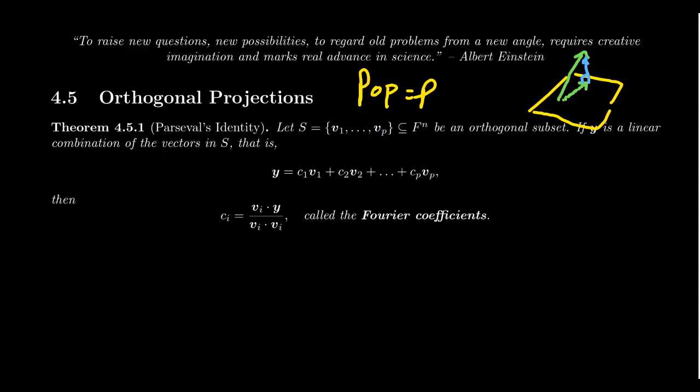And let's claim that this is an orthogonal set. So given any pair of vectors inside of S, their dot product or Hermitian product will equal zero. So we say that a vector Y, well, so we know that, let's say that Y is a linear combination of the vectors from S. So there are coefficients, C1, C2, up to CP.